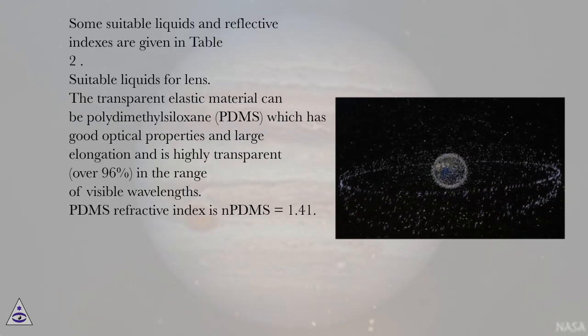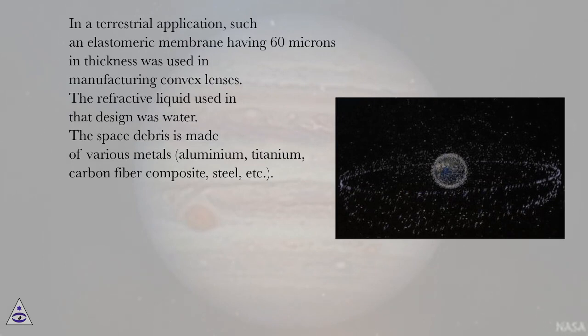Some suitable liquids and reflective indexes are given in Table 2. Suitable liquids for lens. The transparent elastic material can be polydimethylsiloxane, PDMS, which has good optical properties and large elongation and is highly transparent, over 96%, in the range of visible wavelengths. PDMS refractive index is n PDMS equals 1.41. In a terrestrial application, such an elastomeric membrane having 60 microns in thickness was used in manufacturing Combex lenses. The refractive liquid used in that design was water.